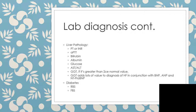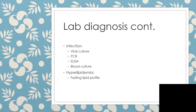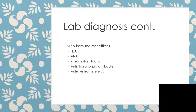For diabetes mellitus, do a random blood sugar and later a fasting blood sugar to rule it out. If you're suspecting infection, do a blood culture; if you think it's viral, do viral culture, polymerase chain reaction, or enzyme-linked immunosorbent assay. If you suspect hyperlipidemia, do a fasting lipid profile. For autoimmune causes, consider HLA, ANA, rheumatoid factor, antiphospholipid antibodies, anti-centromere, and the rest.